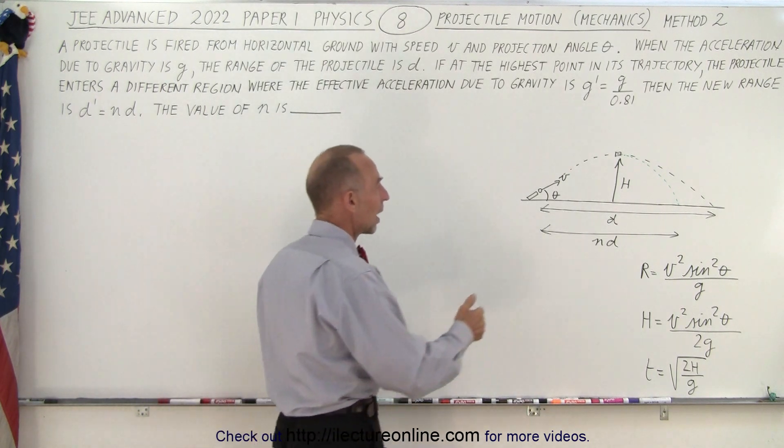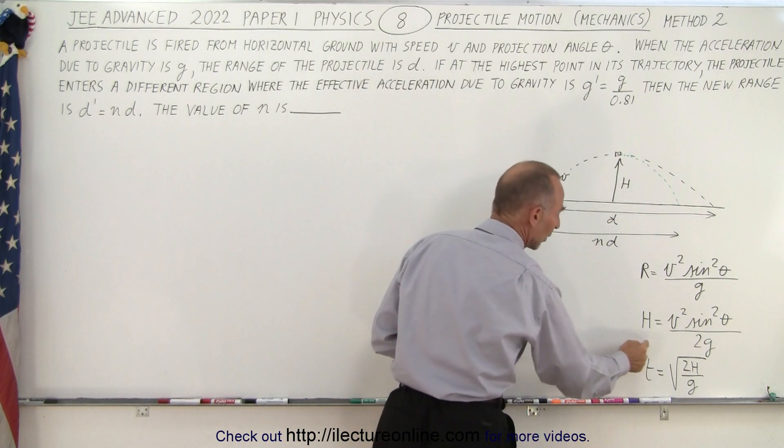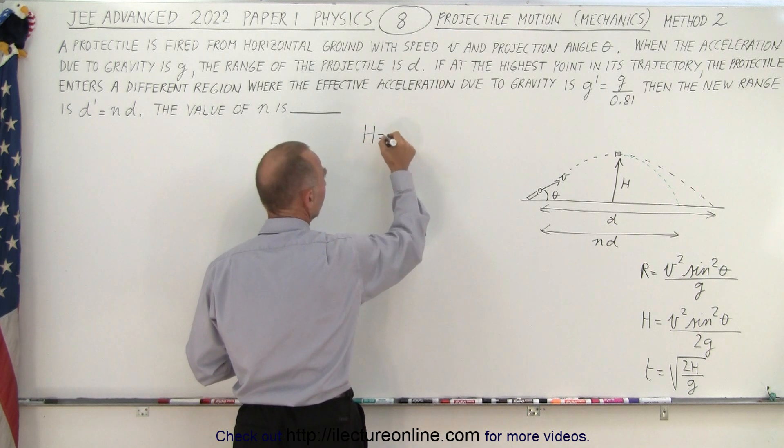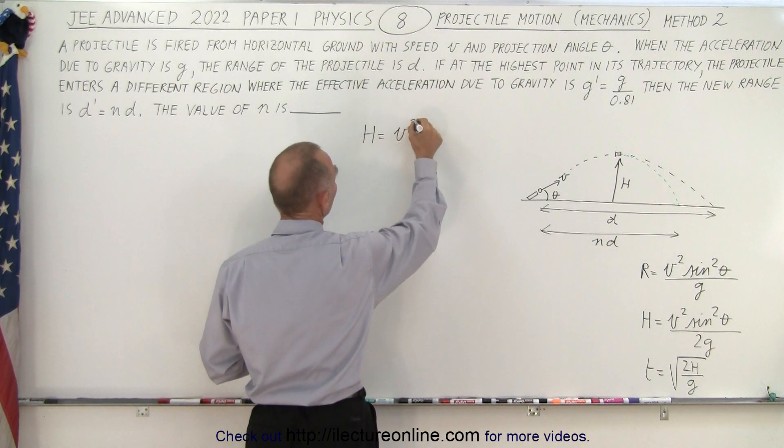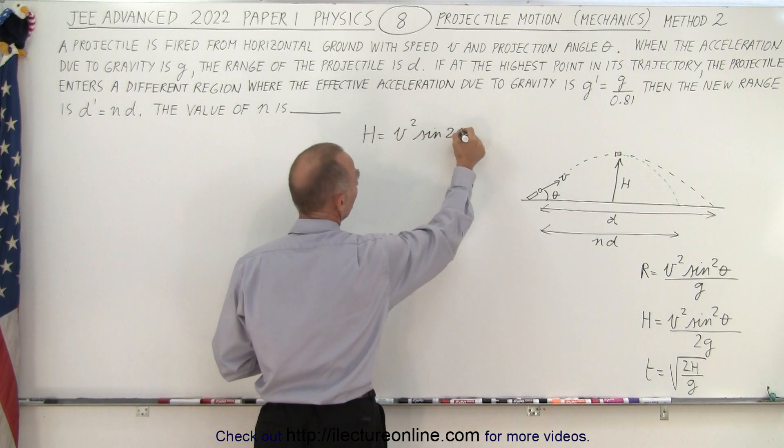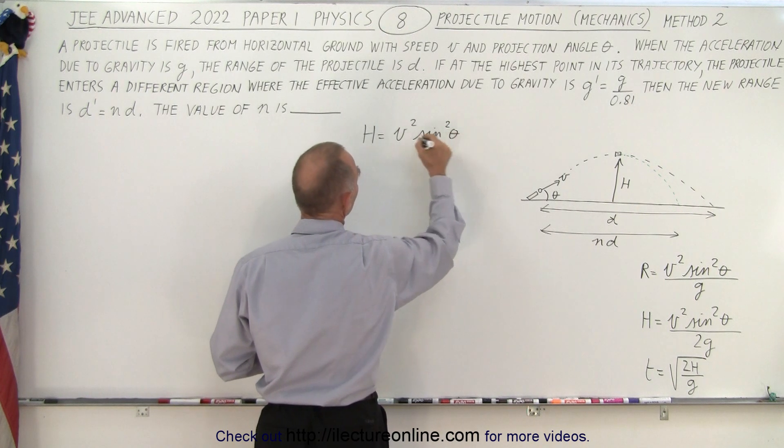How do we do that? Well first of all, we need to find out how high the projectile went on its way up, and so we'll use this equation right here. So we can then say that the height reached is equal to the initial velocity squared times the sine of 2 theta, oh not 2 theta, that's the other one, squared of theta divided by 2g.